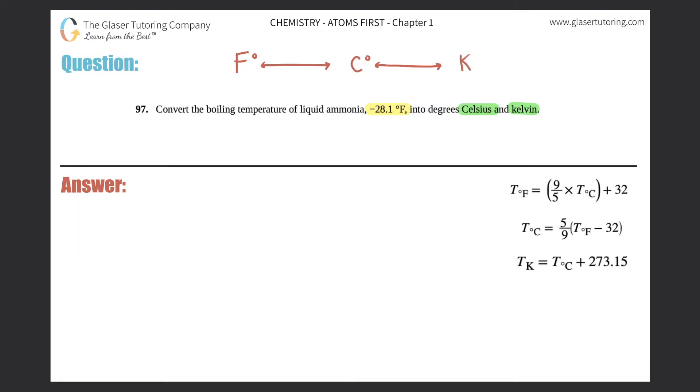Since they're starting us off with -28.1°F, I'm all the way over here, right? So I have to convert to Celsius first, then I can use my Celsius number to get to Kelvin. That's the progression. Let's first get Celsius.